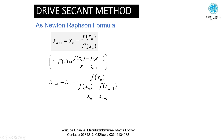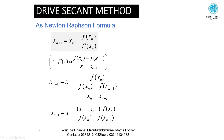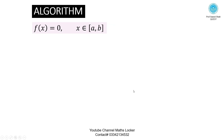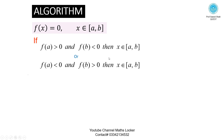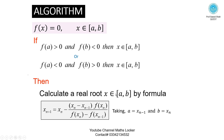Putting this value in Newton's formula: x_{n+1} = x_n - f(x_n) times (x_n - x_{n-1}) divided by f(x_n) - f(x_{n-1}). Algorithm: f(x) = 0, x in the interval [a, b]. If f(a) > 0 and f(b) < 0, then x is in [a, b]. Or f(a) < 0 and f(b) > 0, then x is in [a, b]. Then calculate the root x in interval [a, b] by the formula, taking a = x_{n-1} and b = x_n.